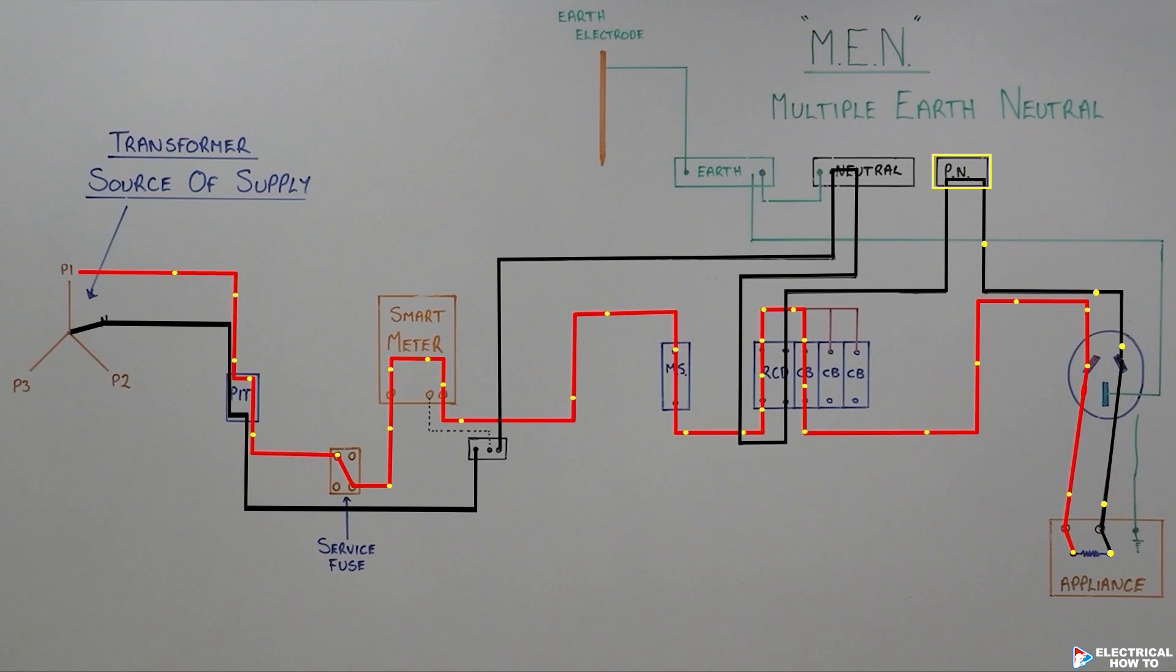It'll go through our protective neutral bar, continue along through our RCD, out of the RCD, and we'll make our way back to our main neutral bar. Out of that main neutral bar onto our main neutral cable. We'll go through our neutral link into our consumer's mains, in the underground, back out through the pit, and eventually make its way back to the source of supply, which is our transformer.